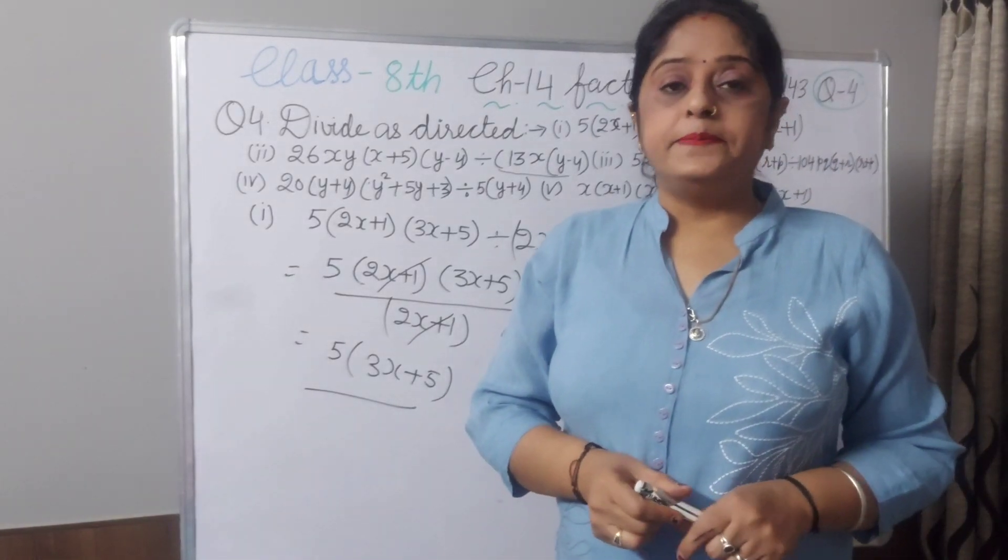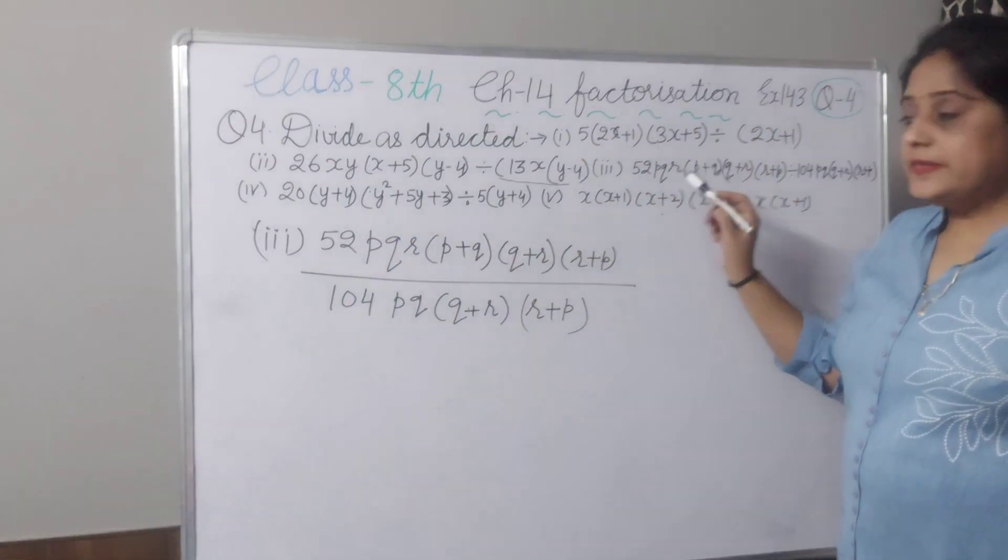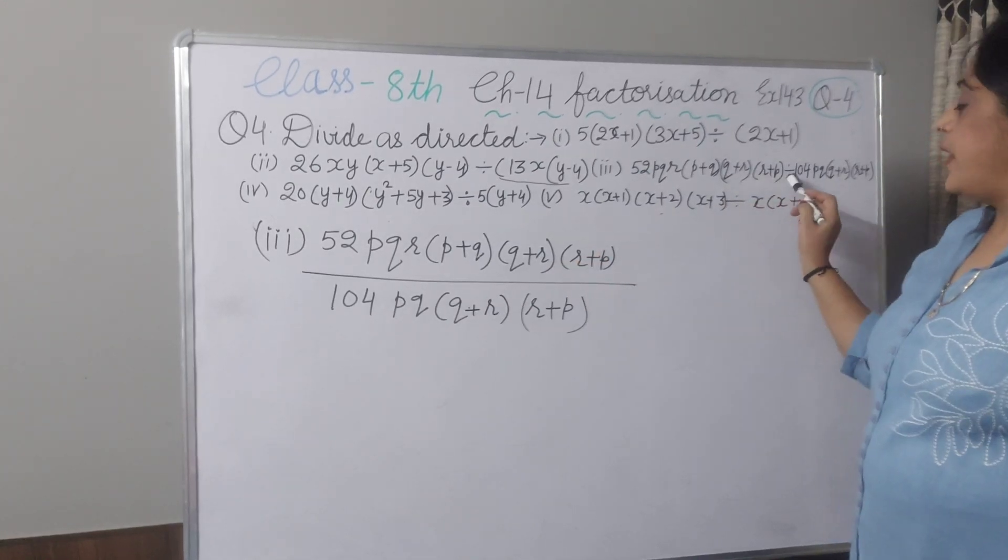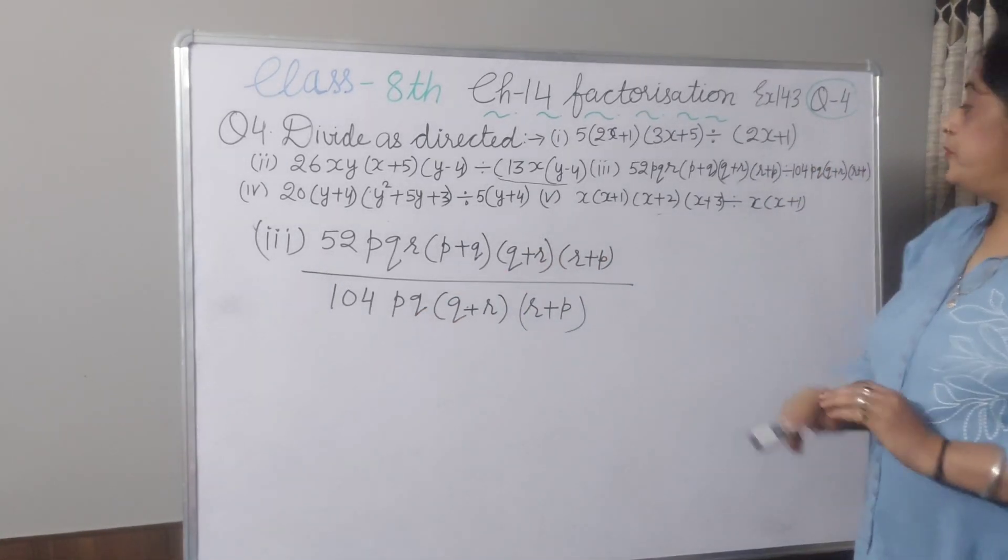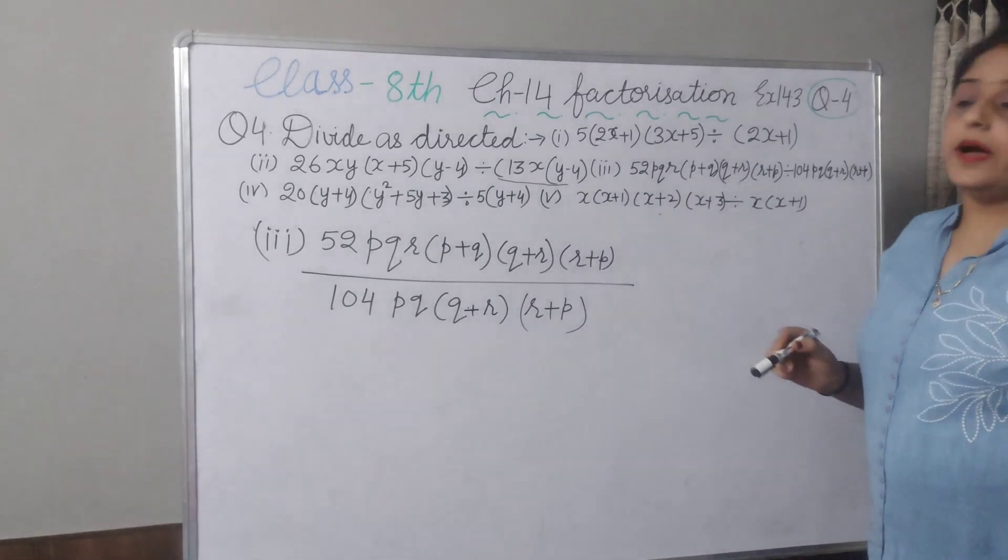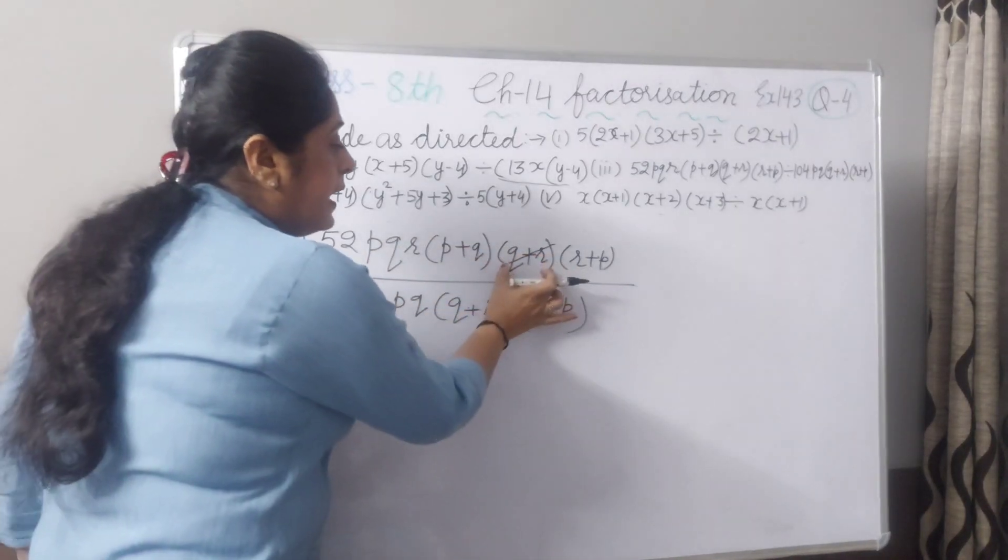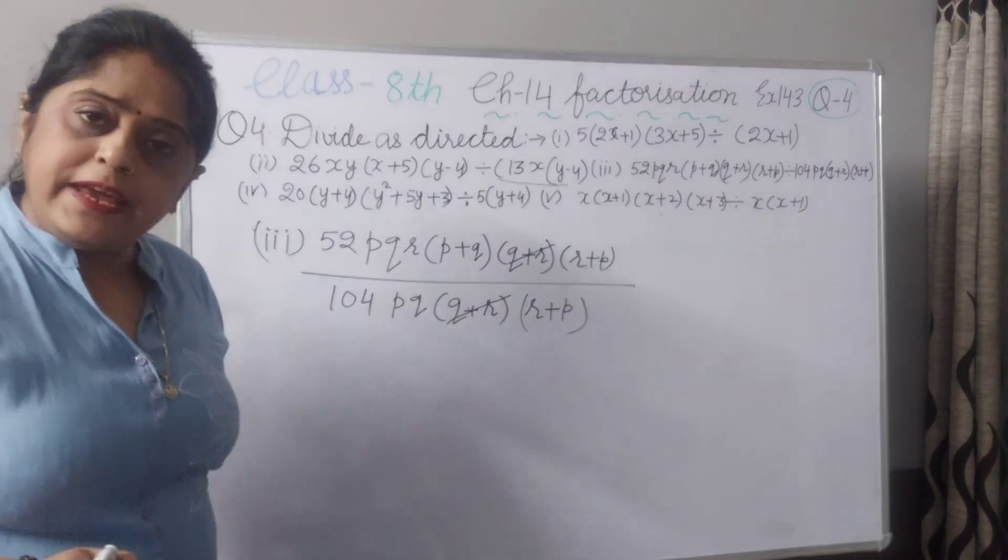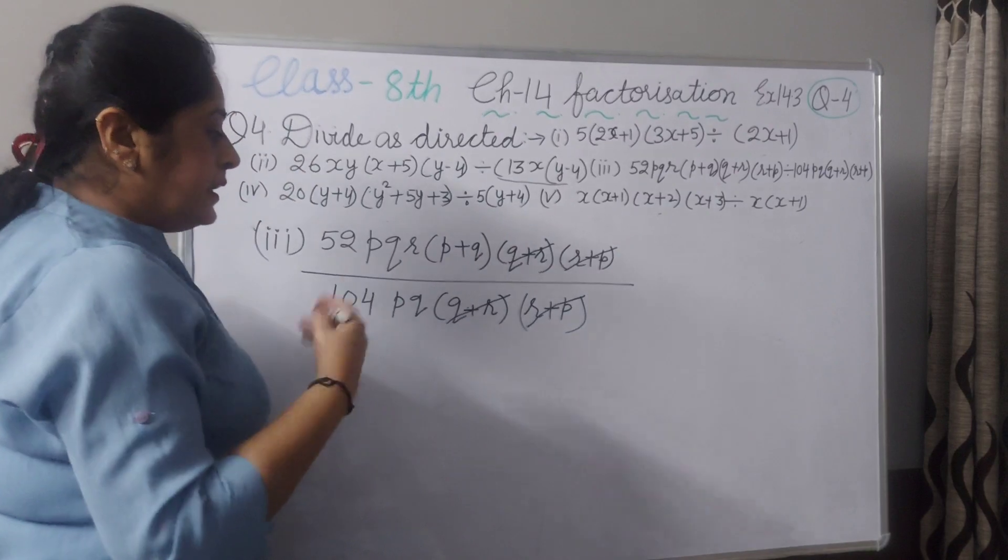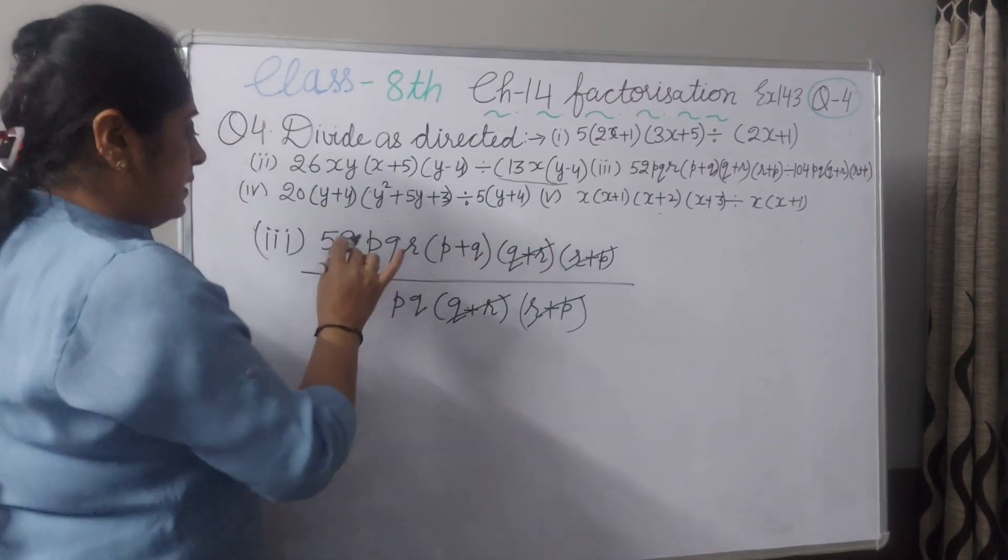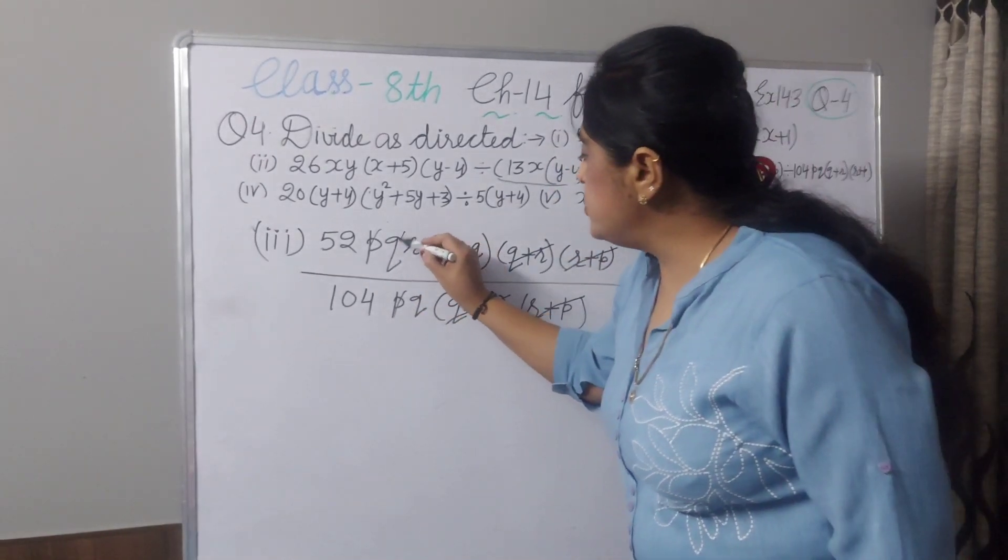Now I will explain third part. See the statement, 52pqr into p plus q, q plus r, into r plus p. You have to divide by 104pq. I have written here 104pq into q plus r into r plus p. Now check, this q plus r is in product and binomial, this q plus r will be cancelled. Now check r plus p as a product and in multiply you can cancel. Now other check, this p cancel with this p and this q cancel with this q.